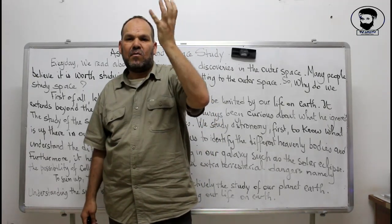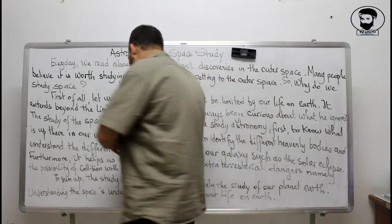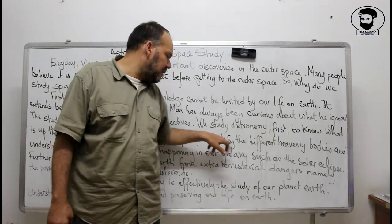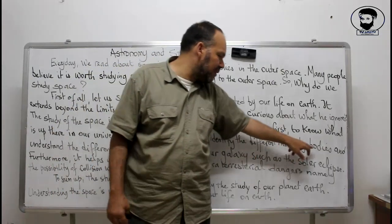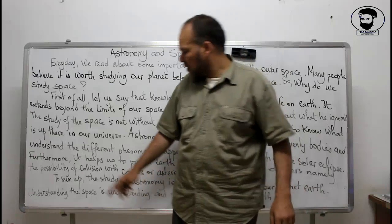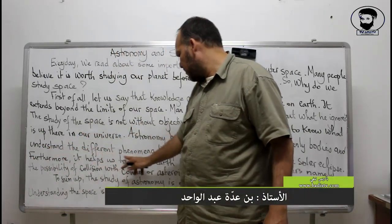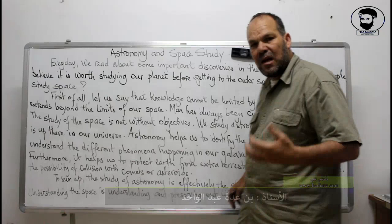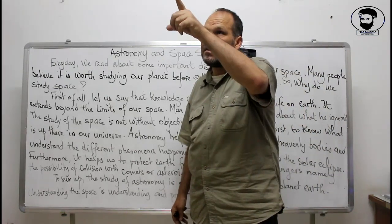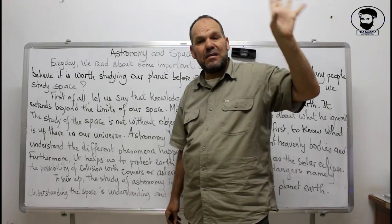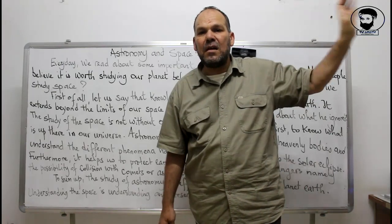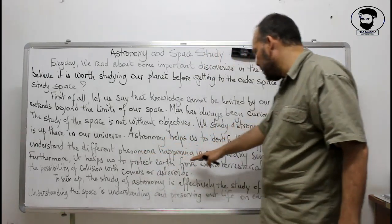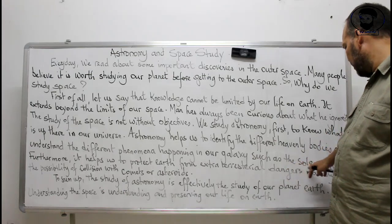When we study astronomy, we try to know what's up there and what are the elements making our universe. Then, astronomy helps us to identify the different heavenly bodies and understand the different phenomena happening in our galaxy. Remember we are using the vocabulary from this unit. Astronomy helps us see: this is a planet, this is a star, this is a moon, this is a galaxy, this is the universe, this is an asteroid, this is a comet — we understand the relations between these.